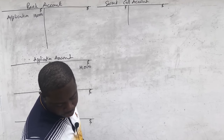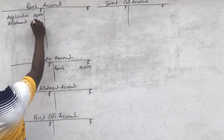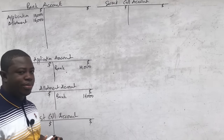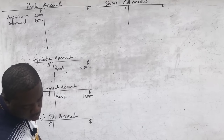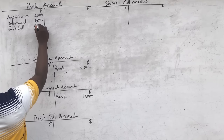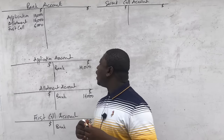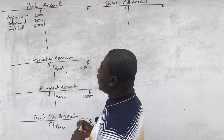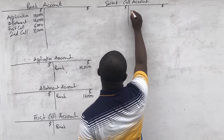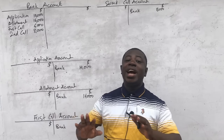On allotment, $16,000 was received, so we debit bank with 'allotment' for $16,000, and credit the allotment account with 'bank' for $16,000. On first call, $6,000 was received: debit bank for $6,000, credit first call account for $6,000. On second and final call, $8,000 was received: debit bank for $8,000, credit second call account for $8,000. We are done with the double entry.